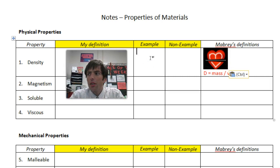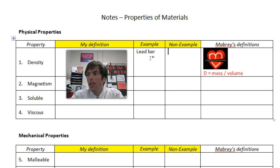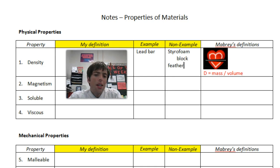An example of some material that's dense is like a lead bar — that's pretty dense. And something that wouldn't be as dense is something that's large and fluffy, like a styrofoam block or a feather, or something like that.